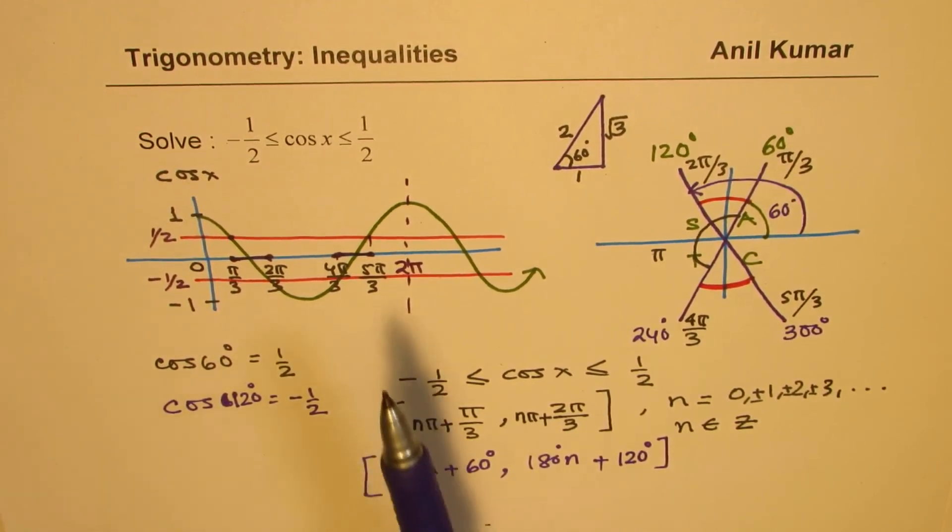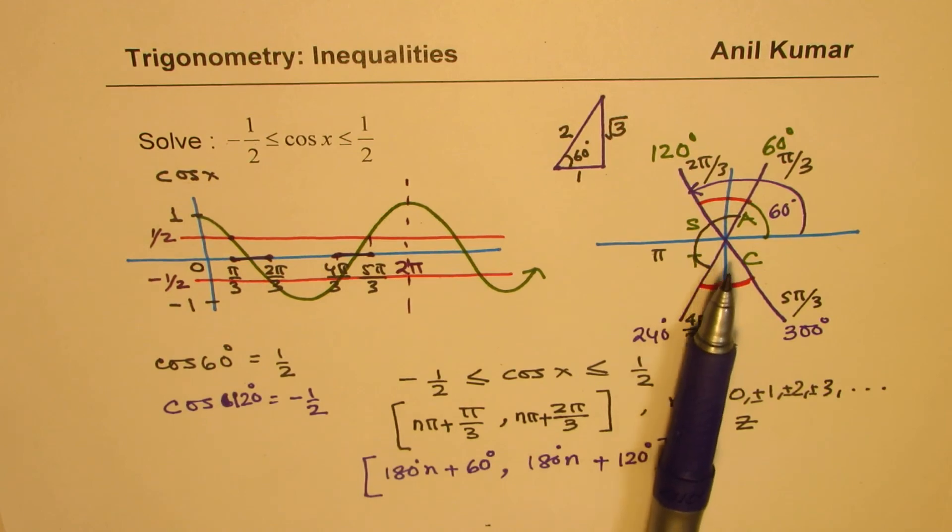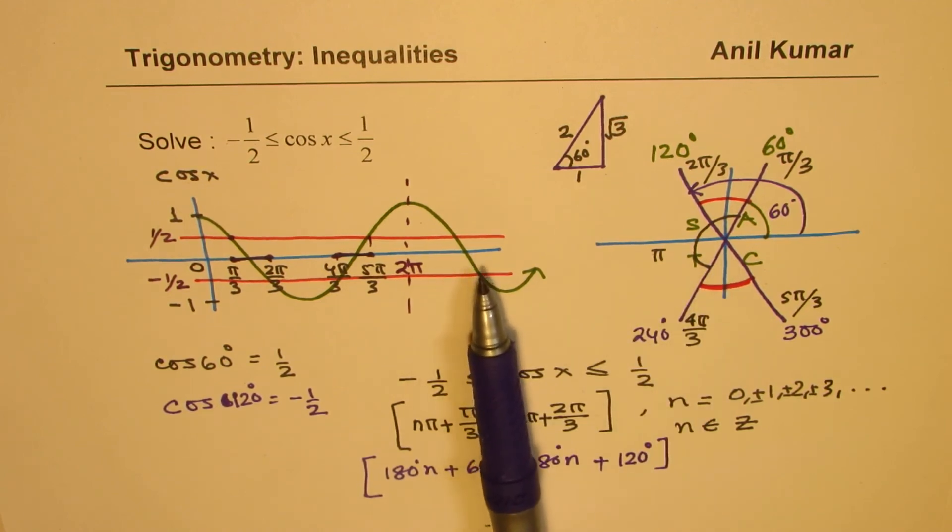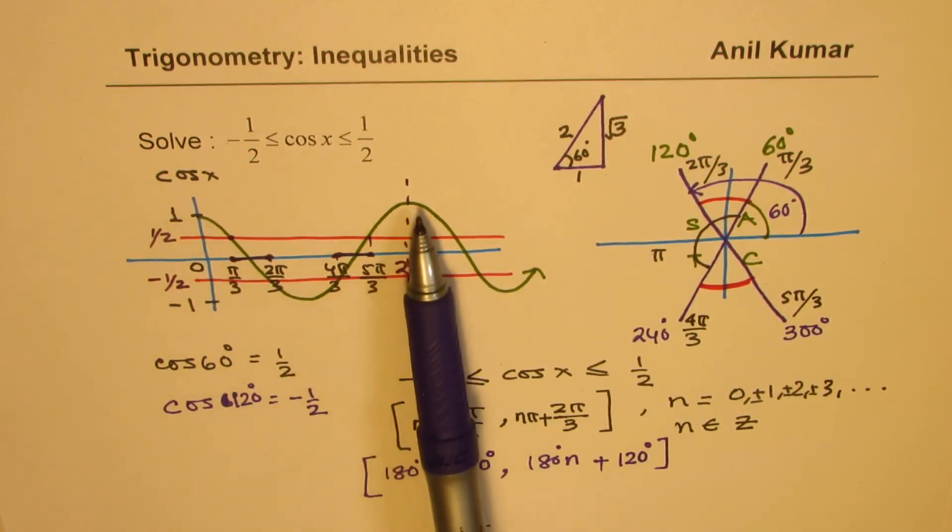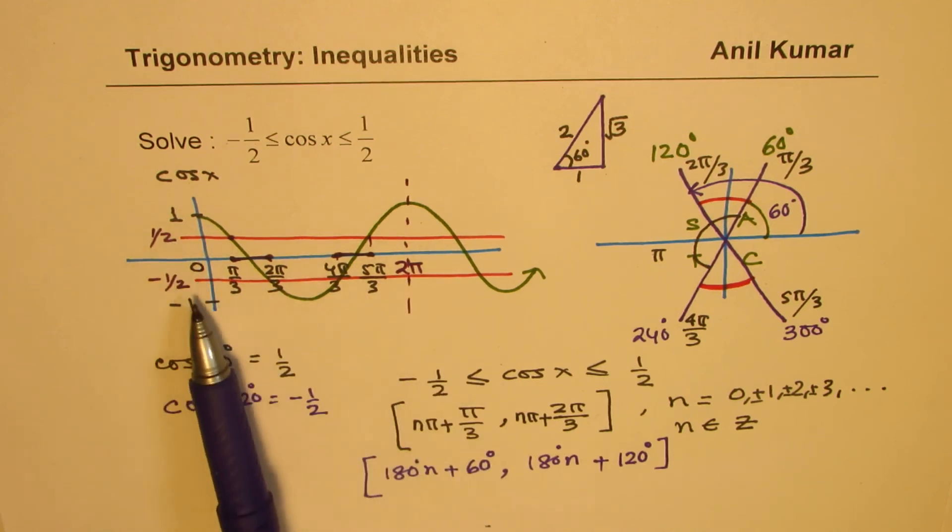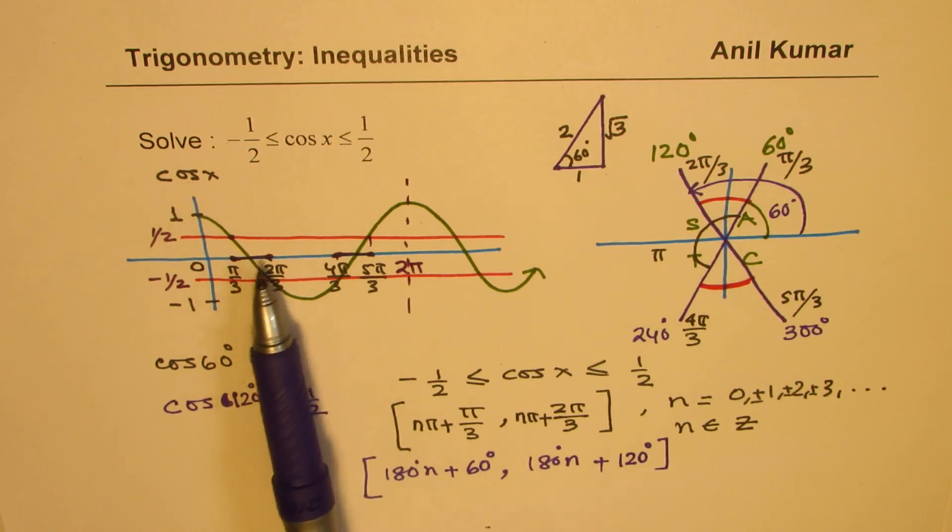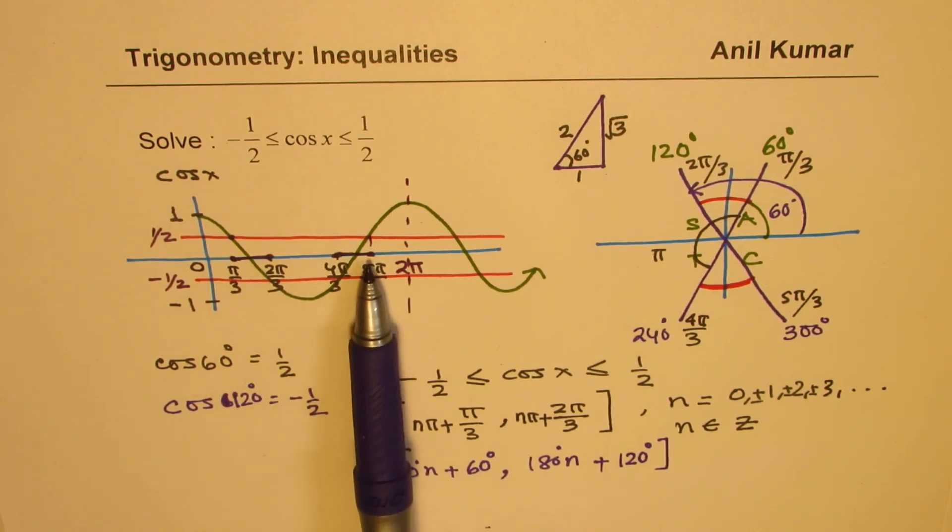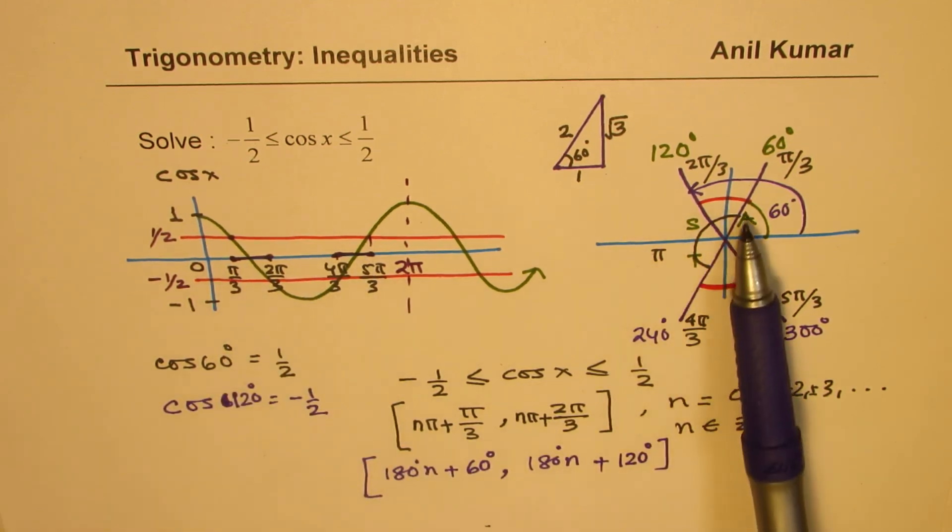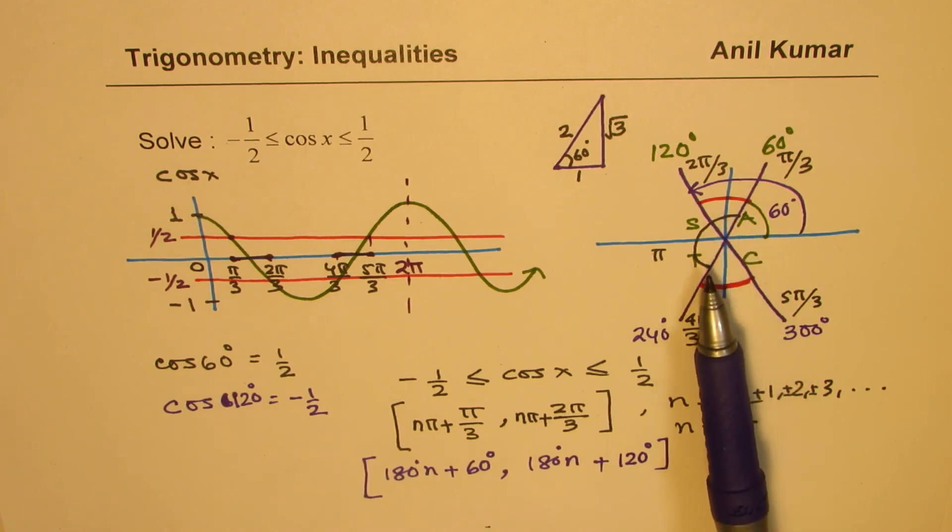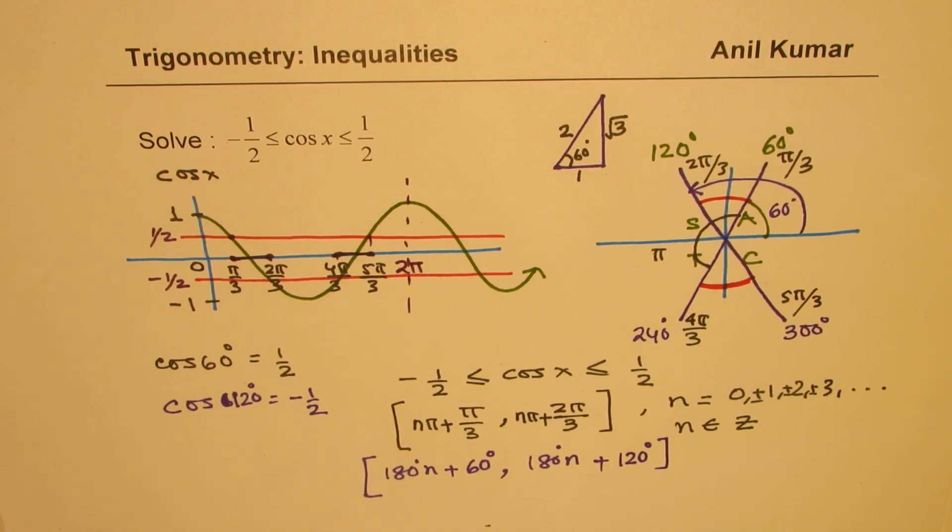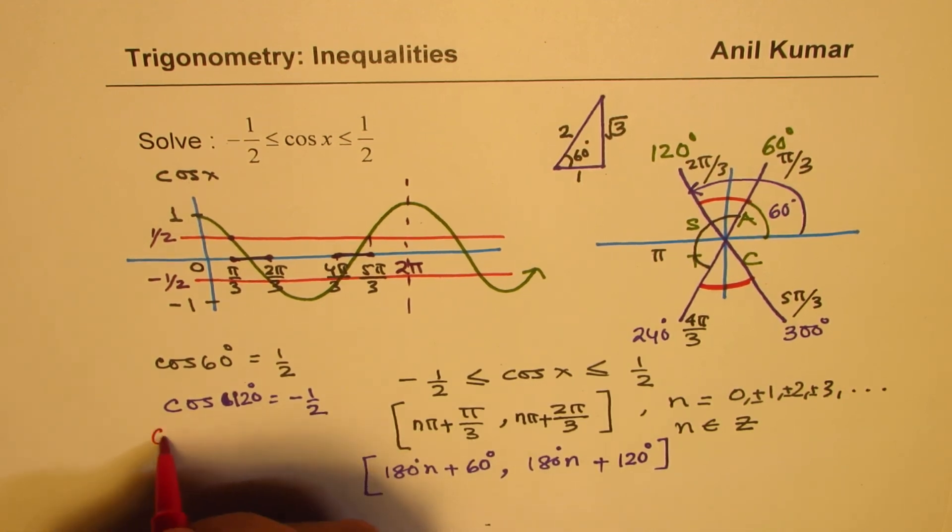I hope from these figures, the approach is absolutely clear. So we began with the cosine graph, drew two lines between plus and minus half. Wherever they intersect, those give you the boundaries for our solution. And we see that these boundaries are repeated after every π or 180 degrees. And therefore, we can provide a general solution as given here. So that becomes the general solution.